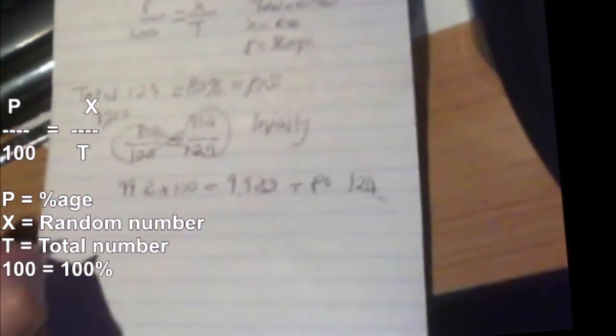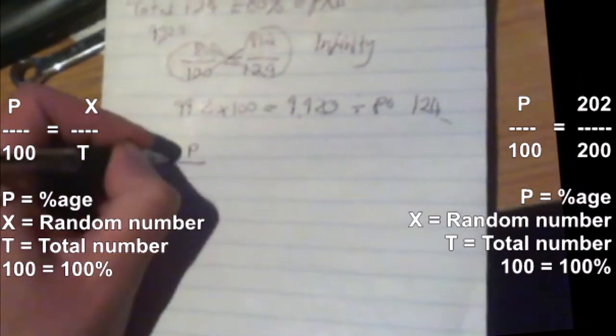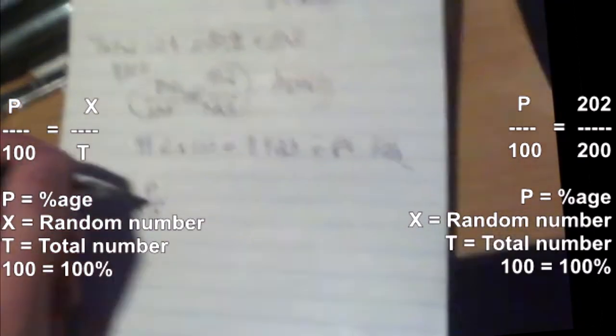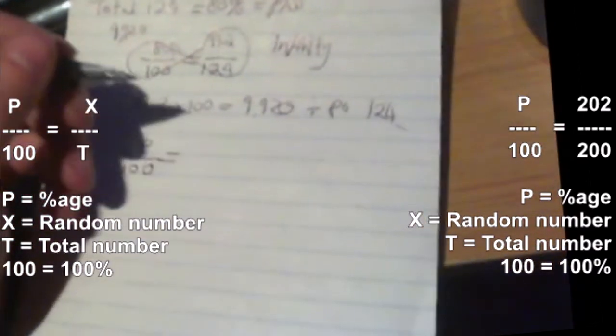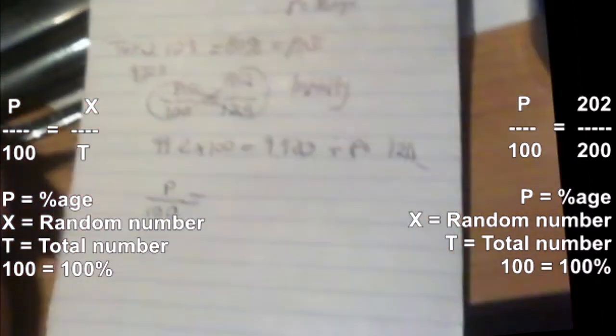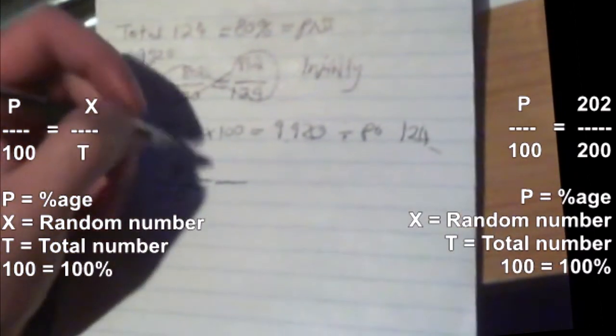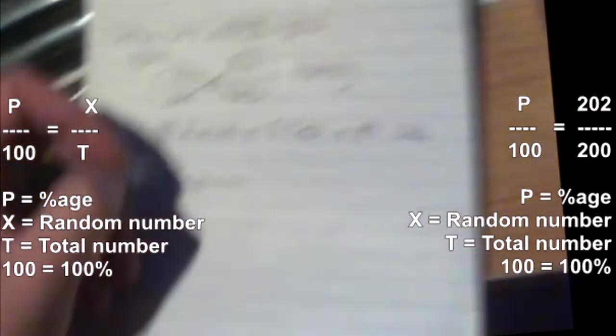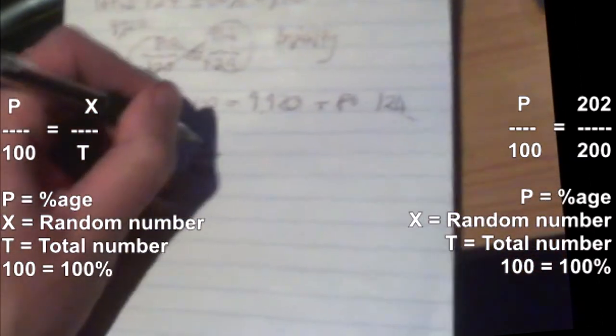Let's do another one. Say I don't know what the percentage is, so we're looking for P. Whatever P is, the maximum is 100. We need a T and an X number. Just to show you what happens even if you go over 100 percent, we'll say 200 for this, and the random number is 202.